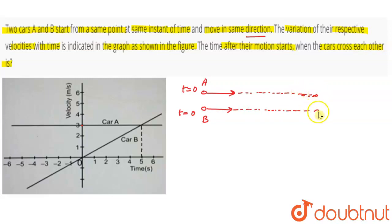At this crossing point, we need to find what the time instant will be. Since they move in the same direction and car B crosses car A, the displacement of car A will equal the displacement of car B.